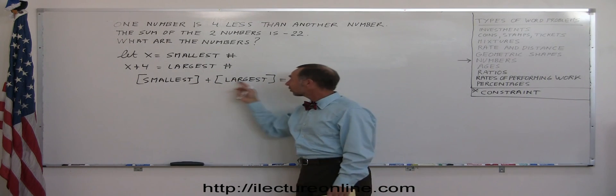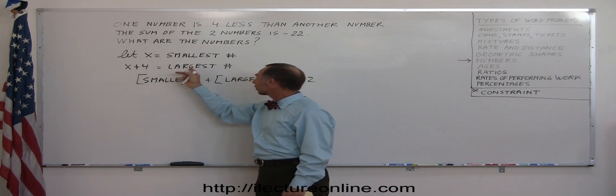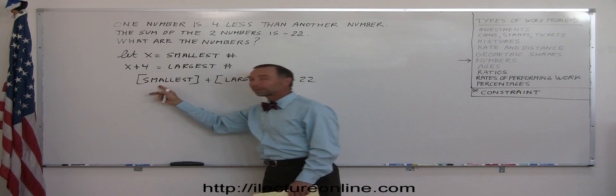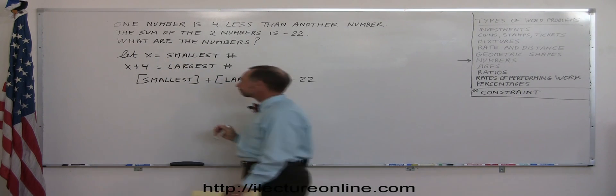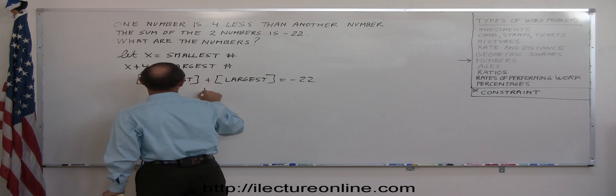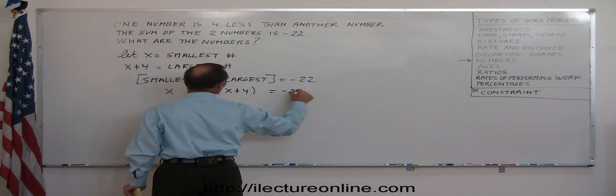And now I'll replace the smallest and the largest by what we defined them as. Since the smallest was defined as x and the largest was defined as x plus four, I'll replace smallest and largest by x and x plus four. So now we have x plus x plus four equals minus 22.